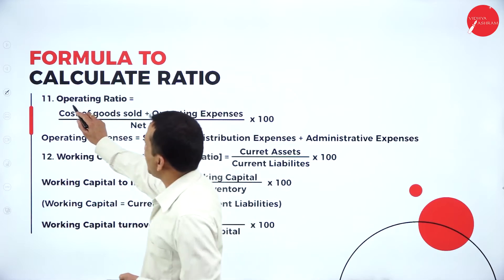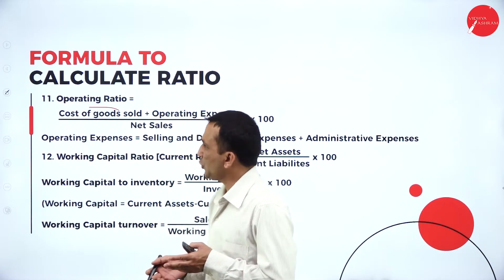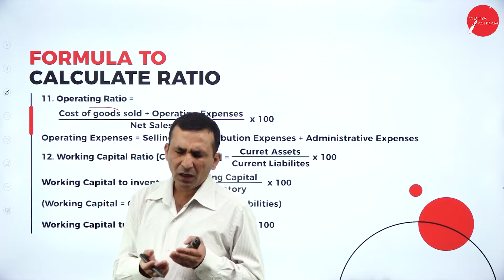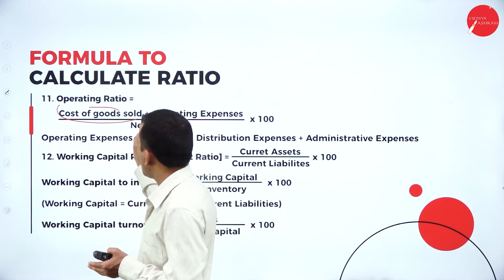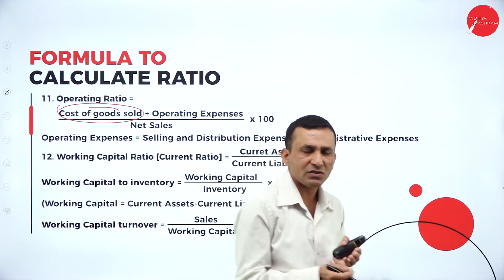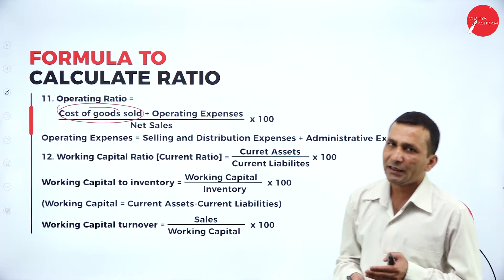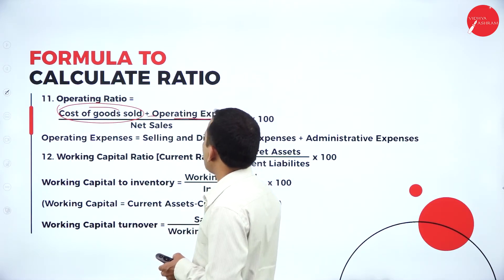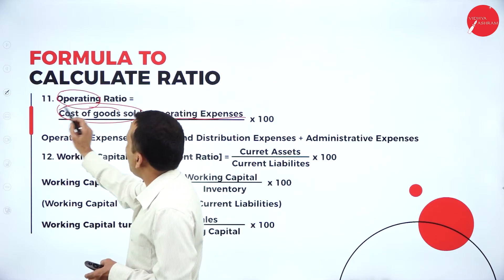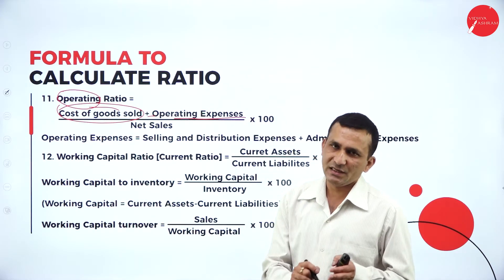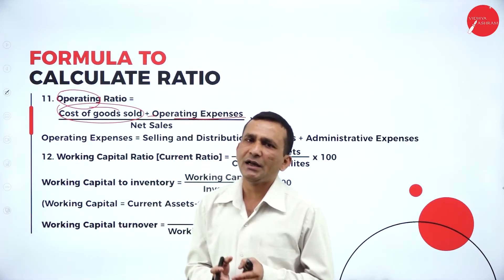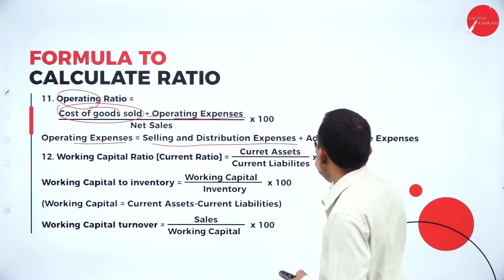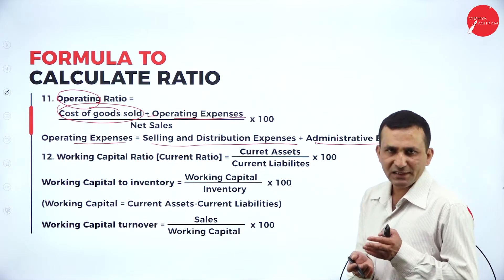Moving to operating ratio, which comes under profitability ratio. Cost of goods sold is calculated as opening stock plus purchases plus direct expenses minus closing stock. Operating ratio is cost of goods sold plus operating expenses, divided by net sales. Operating expenses include selling and distribution expense, administration expense, maintenance expense, etc.